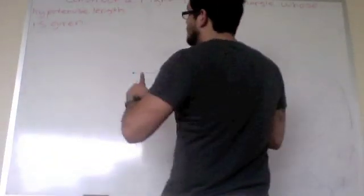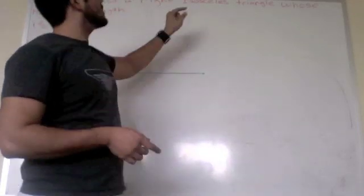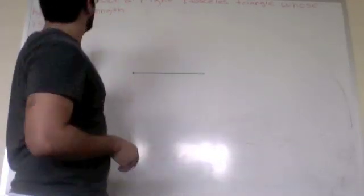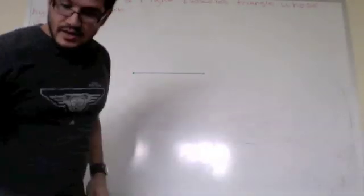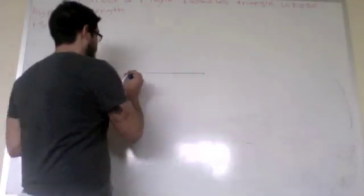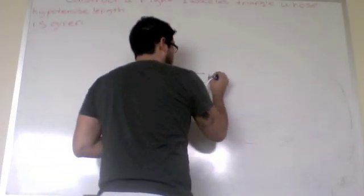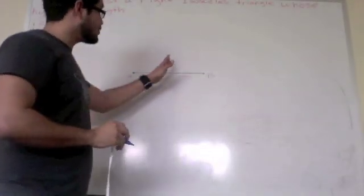I'm going to construct a right isosceles triangle whose hypotenuse length is given. This is the length I'll be using. We're going to call this point A and this point B. Now we're going to find the midpoint first.